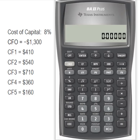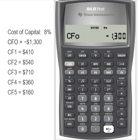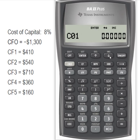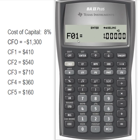Here we are with our calculator and we're going to use the cash flow worksheet. I'm going to hit cash flow and it wants to know the cash flow at time zero — that's going to be my initial investment of $1,300 and that's a negative. Enter and then arrow down. In year one I'm going to have a cash flow of $410, enter, down. Remember this F01 is saying how frequently are you going to get that cash flow of $410.